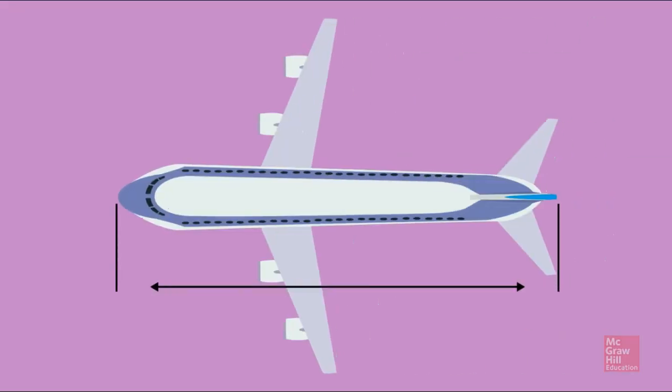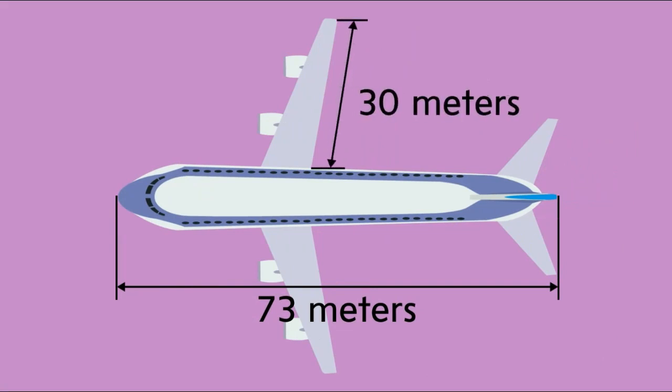The body of this plane is 73 meters long. Each wing is 30 meters long. So, how much longer is the body than the wing?